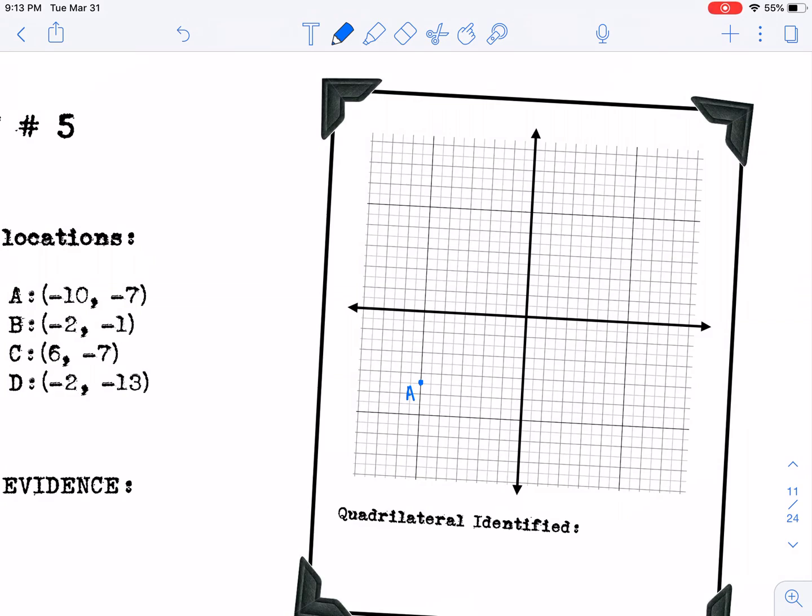B is negative 2, negative 1. So B is up here.